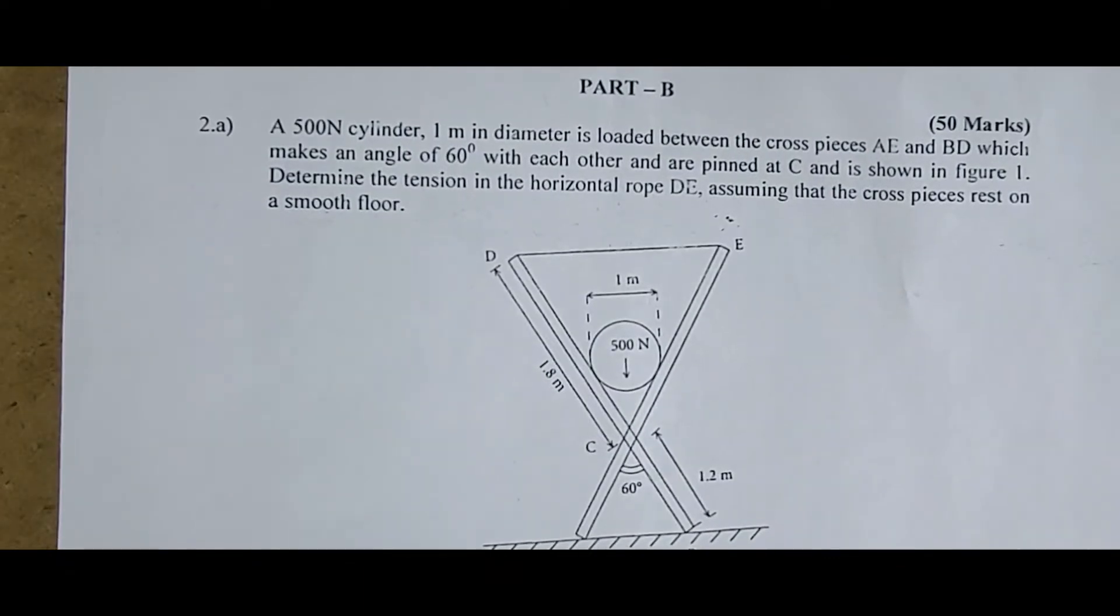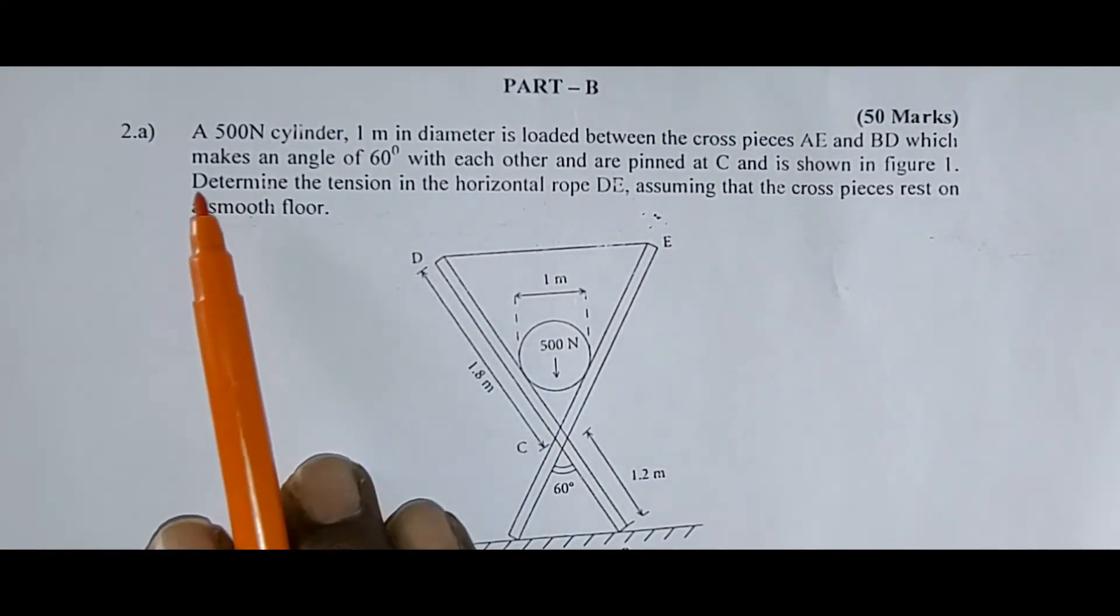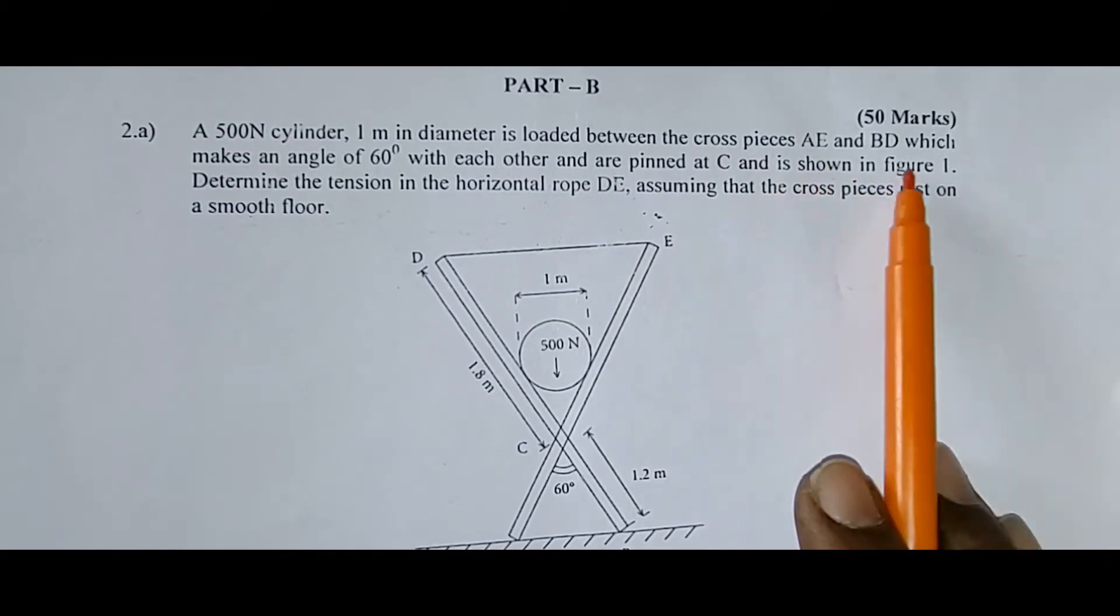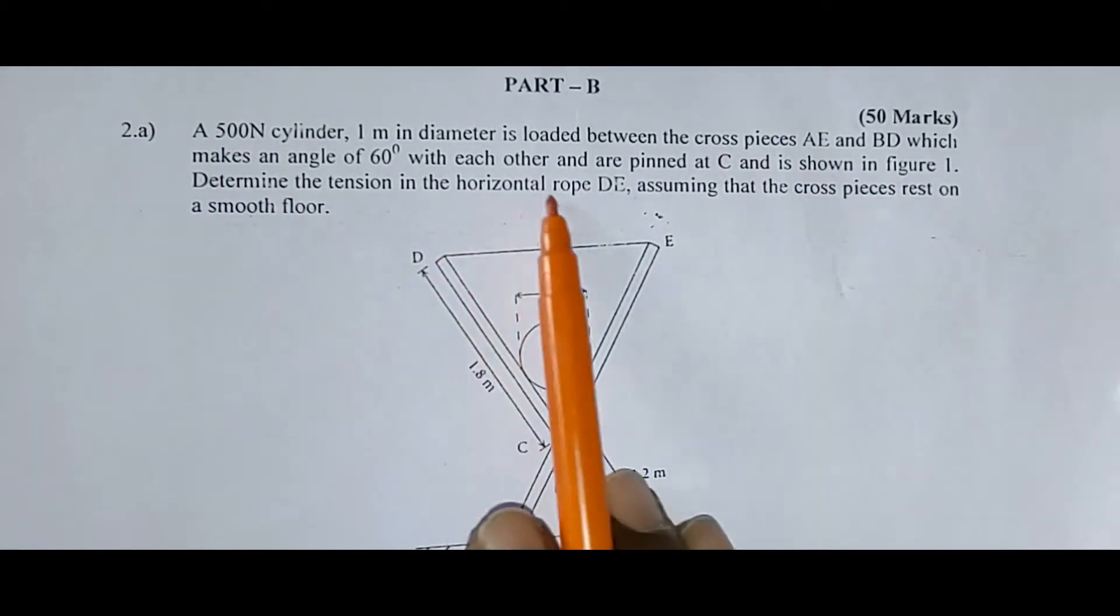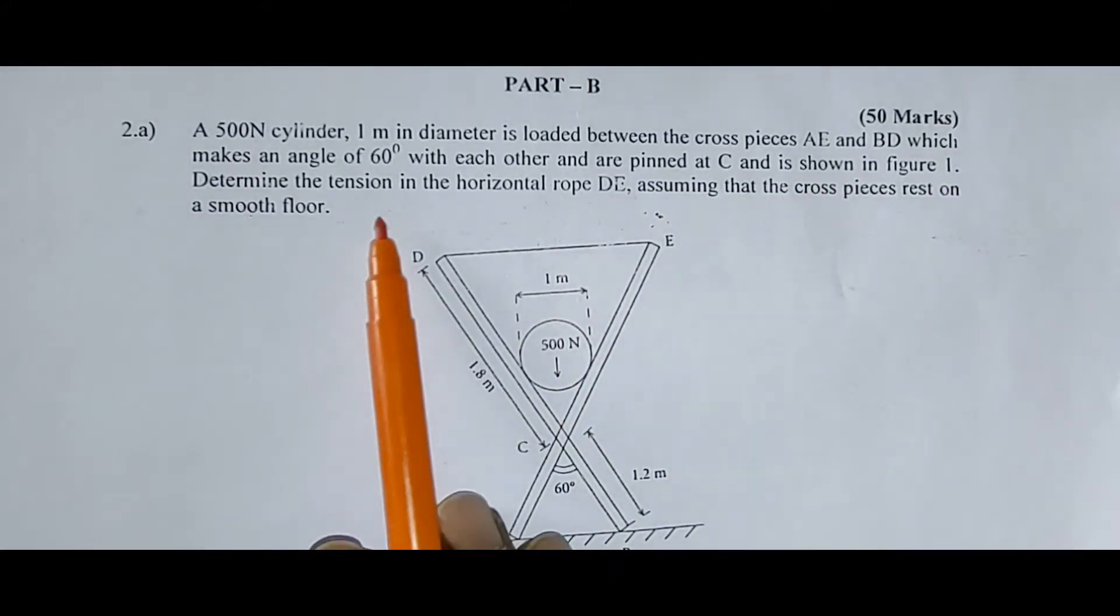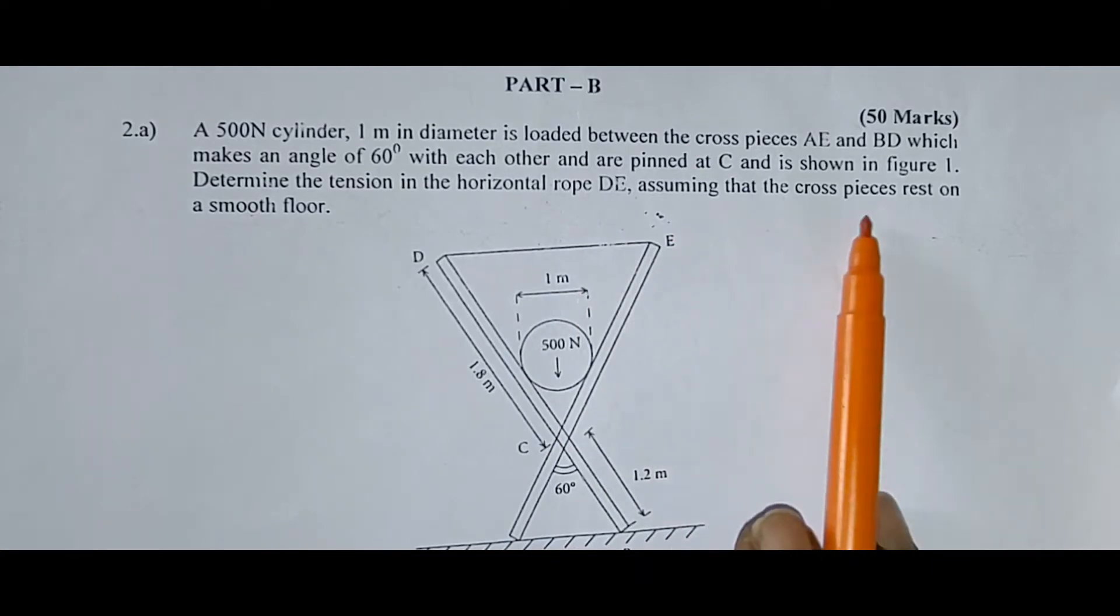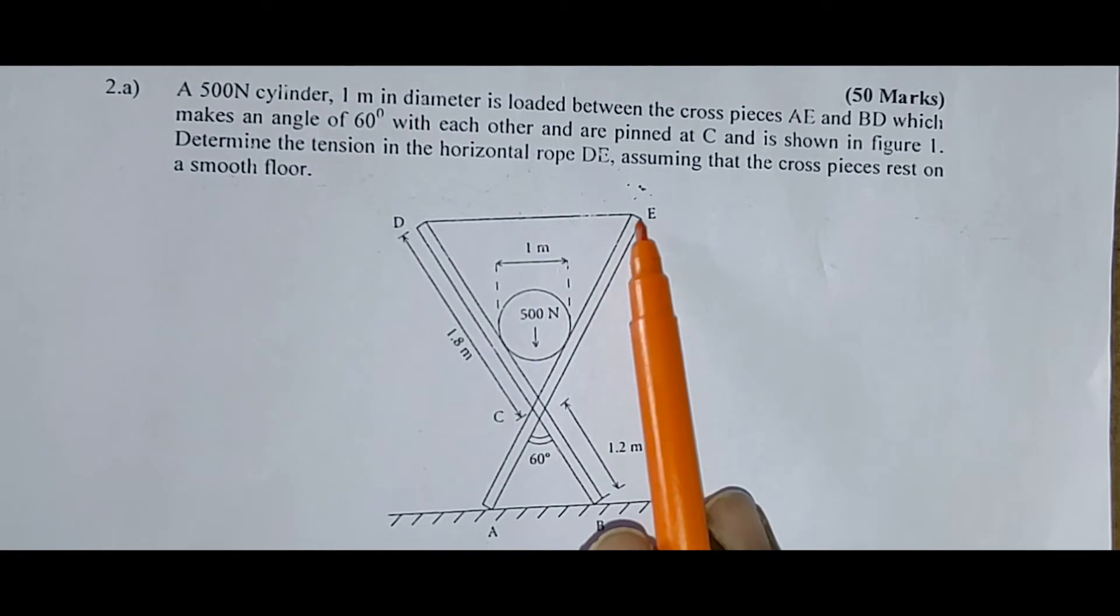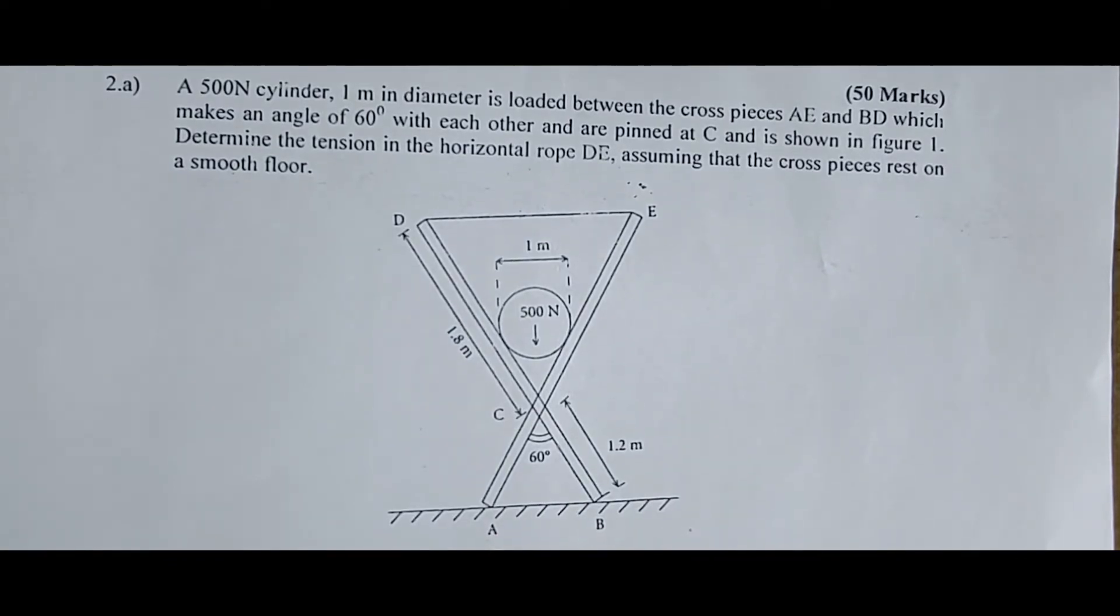So we will go for the essay question. This is the question: A 500 N cylinder, 1 meter in diameter is loaded between the cross pieces AE and BD which makes an angle of 60 degrees with each other and are pinned at C as shown in figure, determine the tension in the horizontal drop DE, assuming that the cross pieces rest on a smooth floor. These are the two cross pieces resting on the floor, and this is the 500 N cylinder. What we have to find out here is DE, determine the tension in the rope DE.